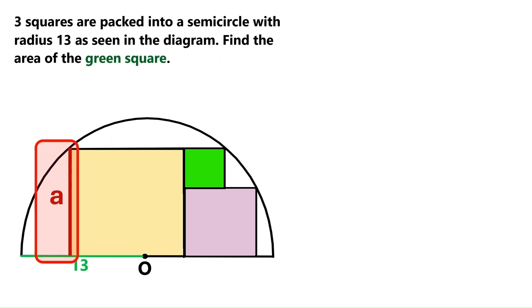Let's call the side of this big cream-colored square a. And we'll call the side of this purple gray square b. Now, let's draw this radius here. And we know it's 13. Let's draw another radius here. And this one is also 13.